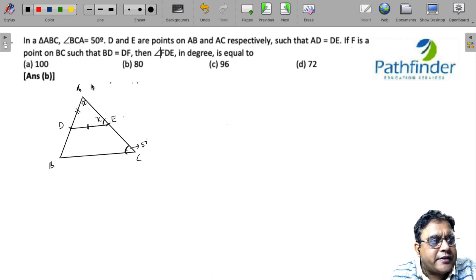Then if F is a point on BC, let us mark this point as F on BC, then BD and DF. So let us join DF also. We have BD and DF also as equal and you are required to find this angle which I am marking out in red, angle FDE.